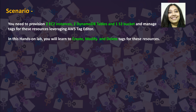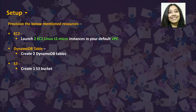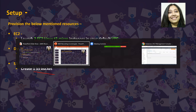The scenario for our lab today: you need to provision two EC2 instances, two DynamoDB tables, and one S3 bucket, and manage tags for these resources leveraging AWS Tag Editor. In this hands-on lab you will learn to create, modify, and delete tags for these resources. You need to provision two Linux EC2 T2 micro instances in your default VPC, create two DynamoDB tables, and create one S3 bucket. Let us go ahead and finish the setup.